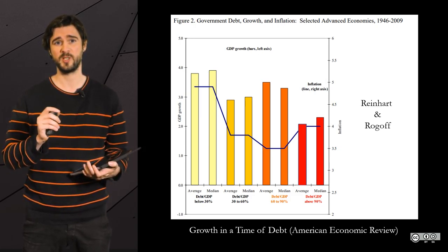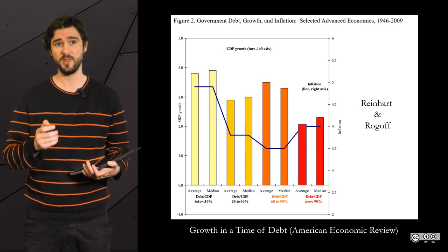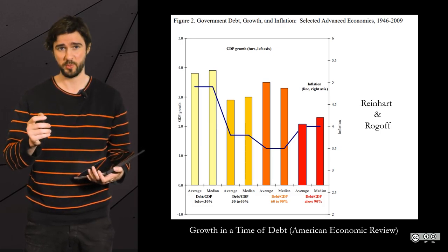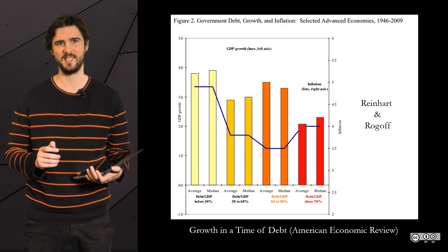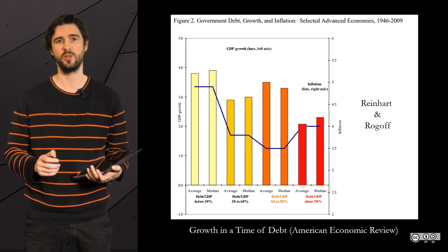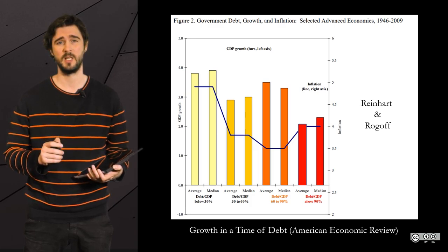The average growth for high debt was close to 0% originally, but when the mistake was corrected, it reached 2%. So, no such drastic decrease in GDP after the magical threshold of 90%.